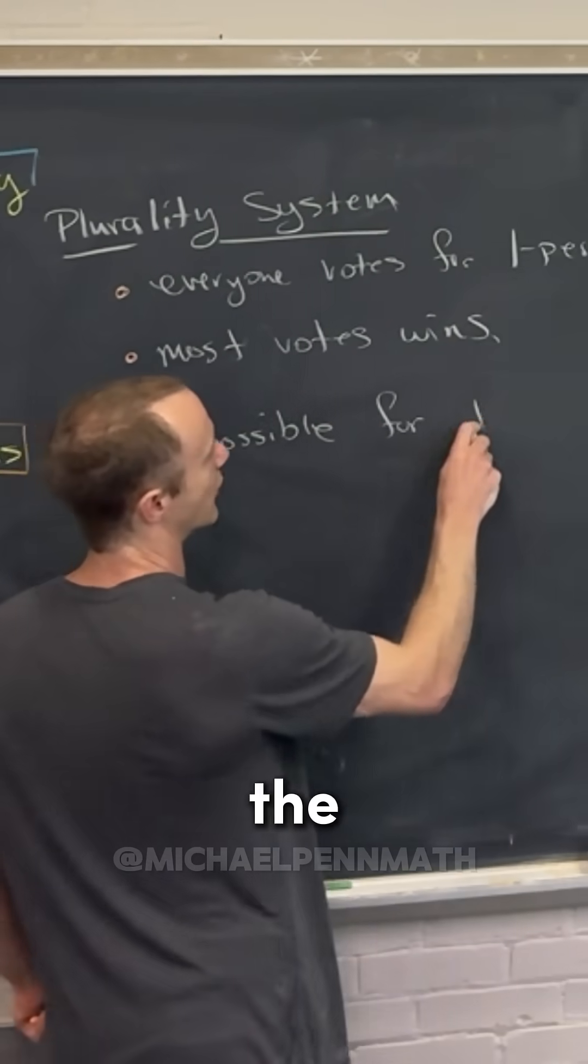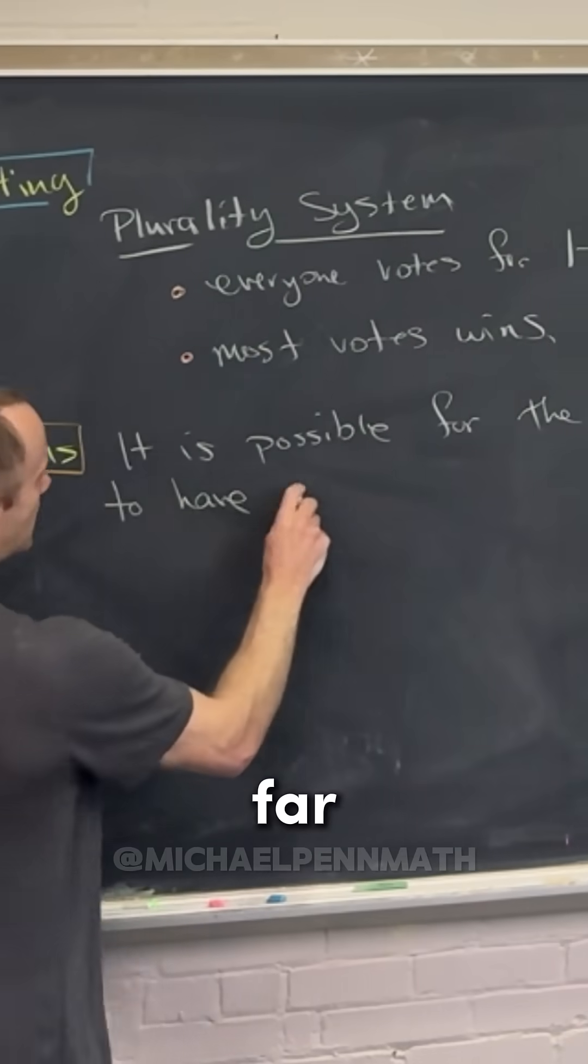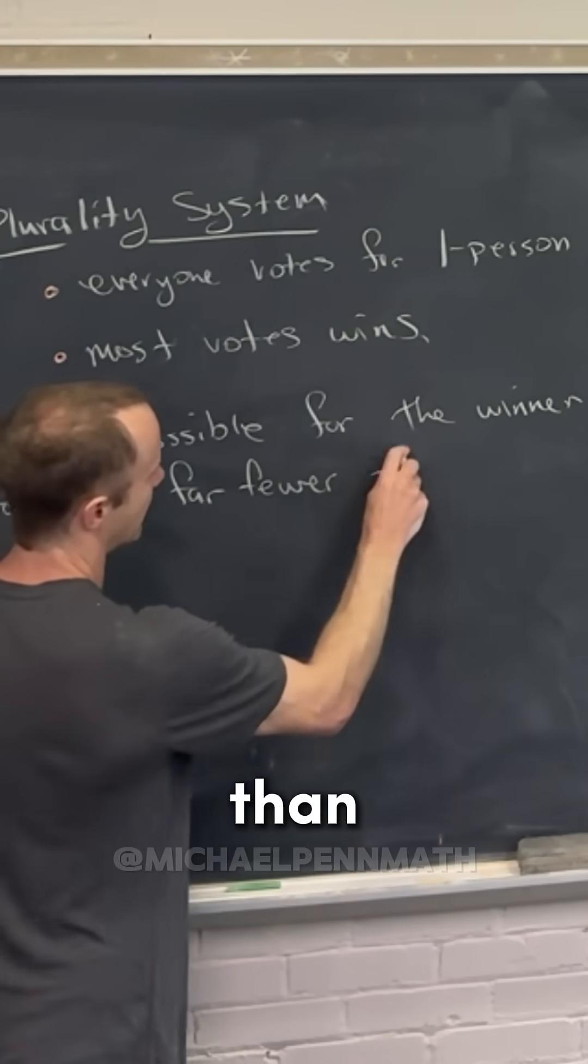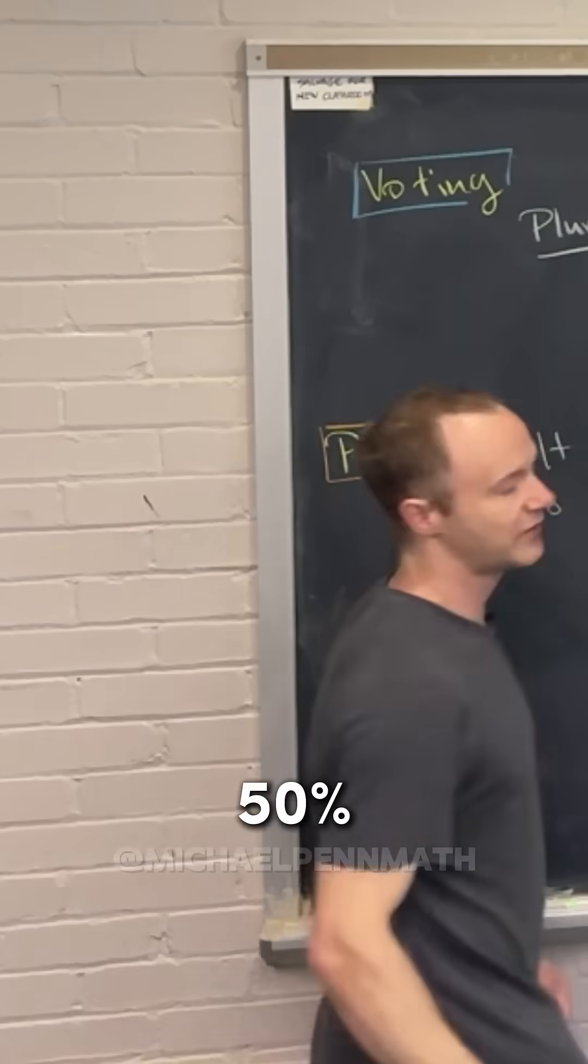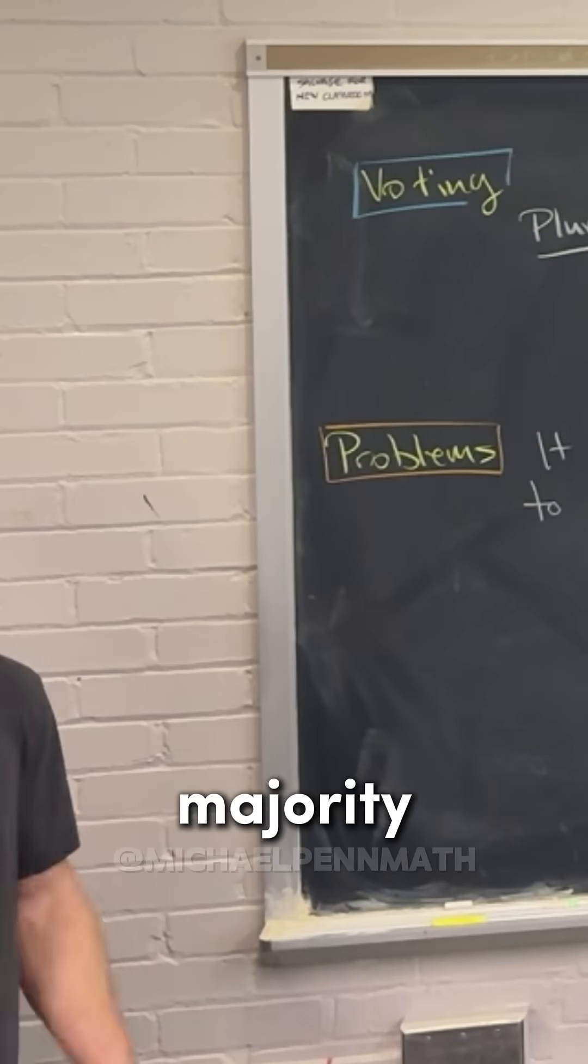So it's possible for the winner to have far fewer than 50% of the votes. This being what we call a majority, right?